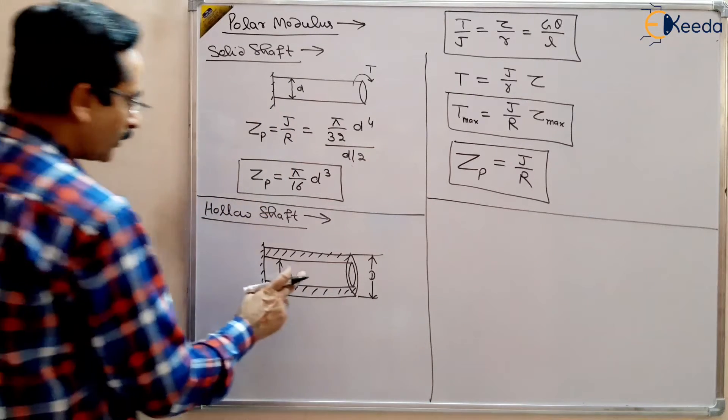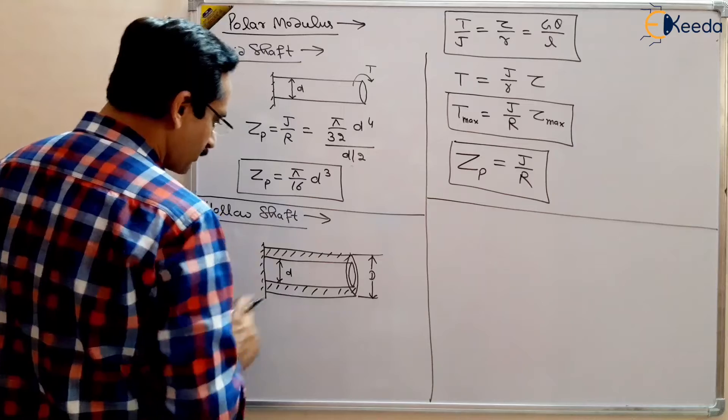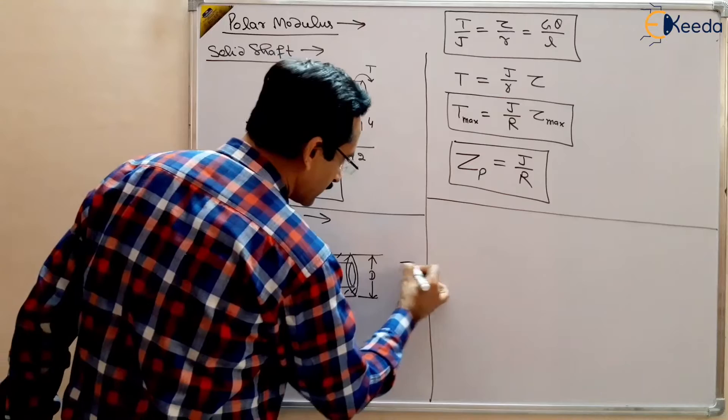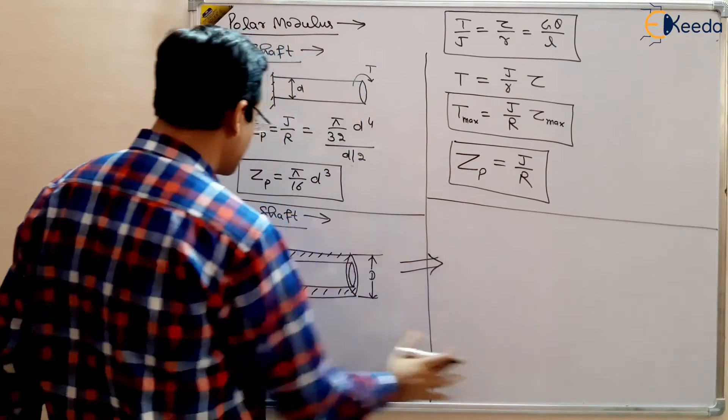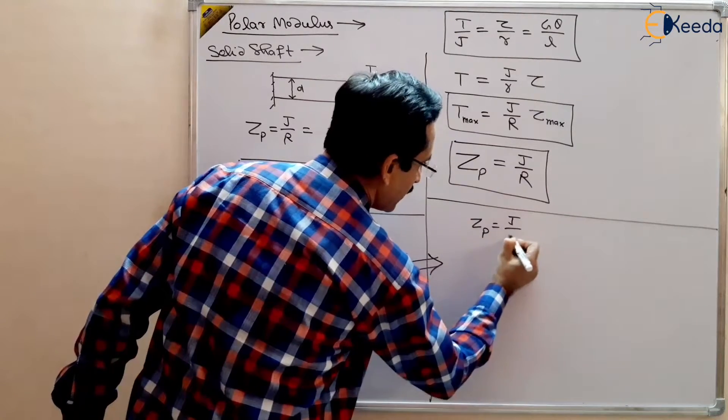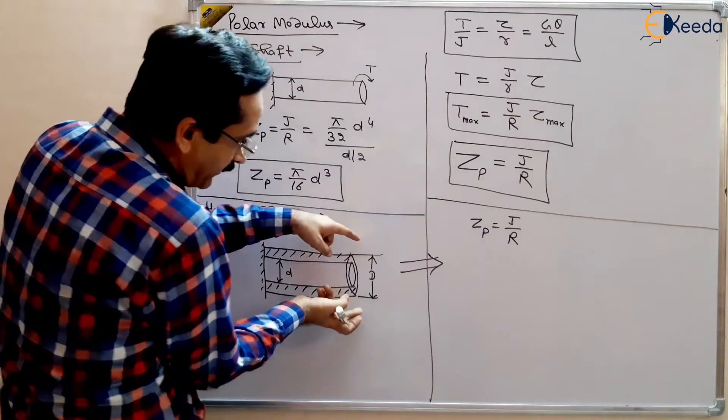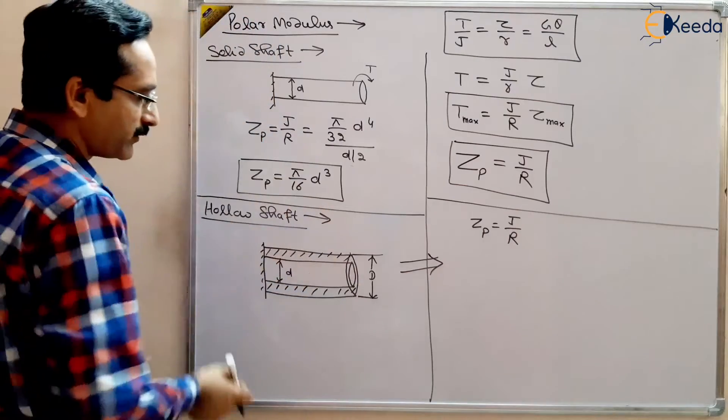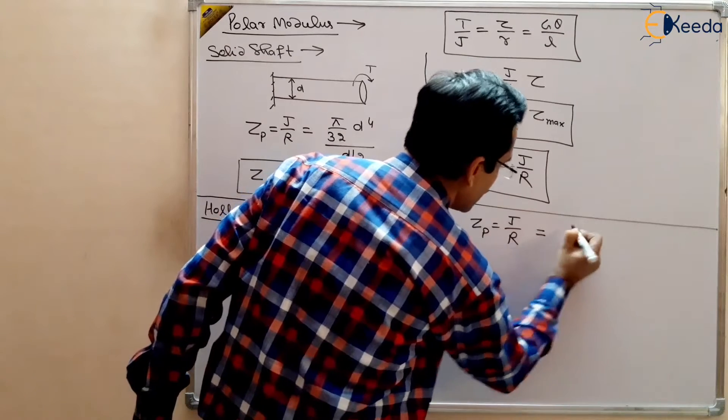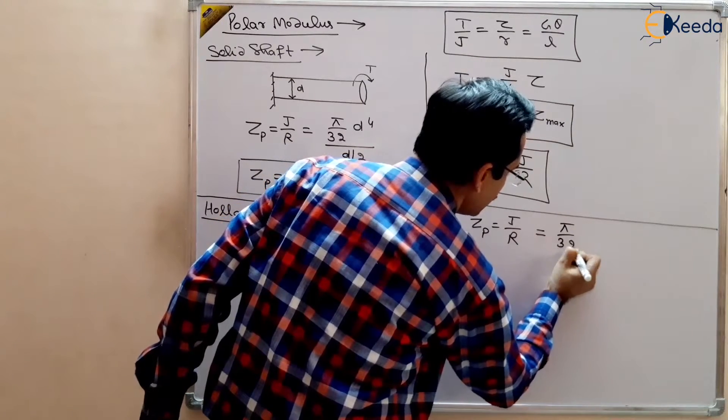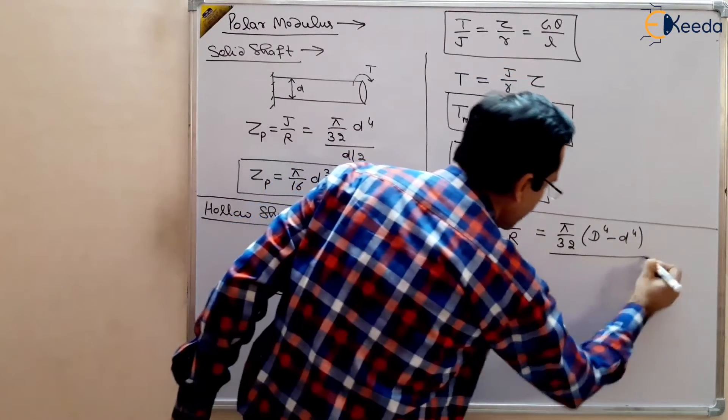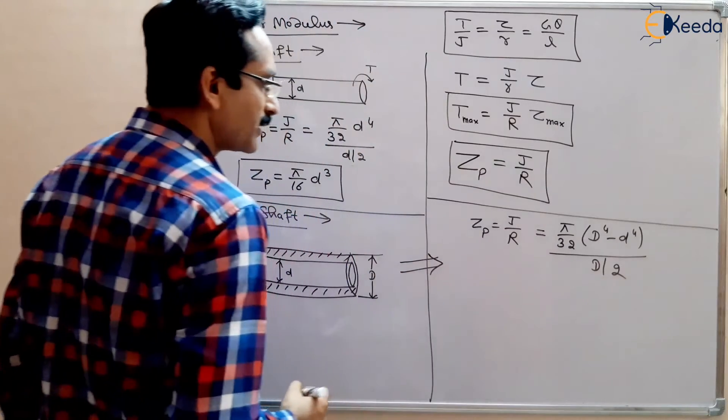So what is the Polar Modulus for this shaft, hollow shaft. So what is Polar Modulus for hollow shaft? So that I am writing here because space is there. So ZP will be equal to J by R. Now R is the capital R, outer radius of the hollow shaft. There are two radius, outer radius of the hollow shaft. So that will be equal to pi by 32 d to the power 4 minus d to the power 4 divided by capital D by 2.